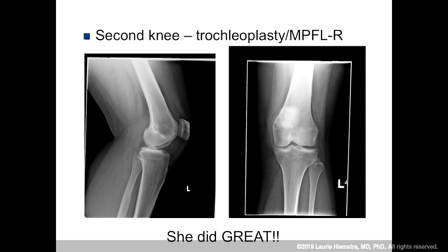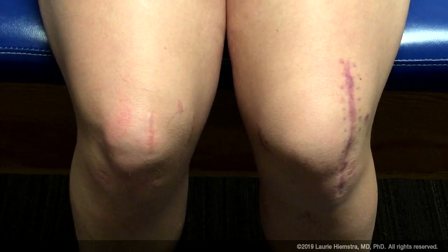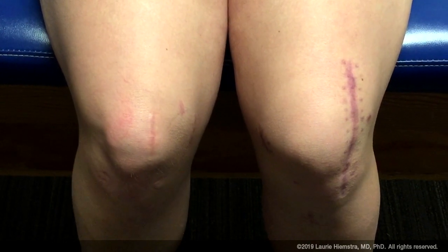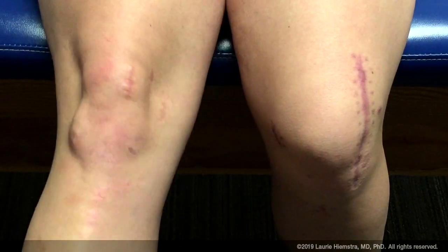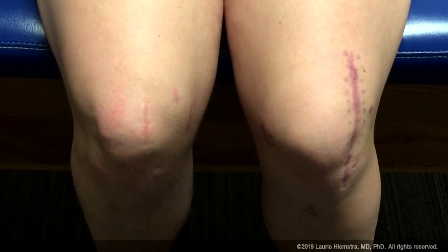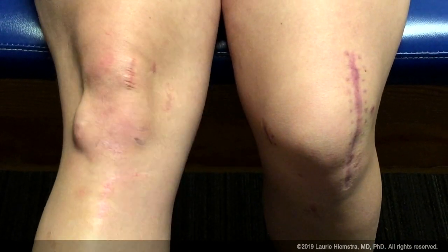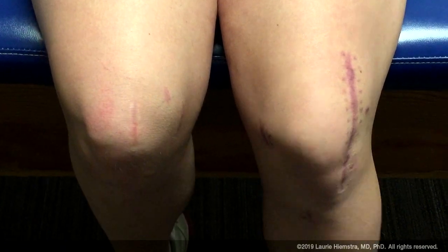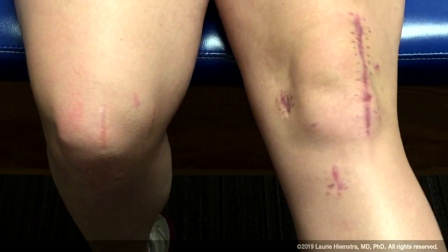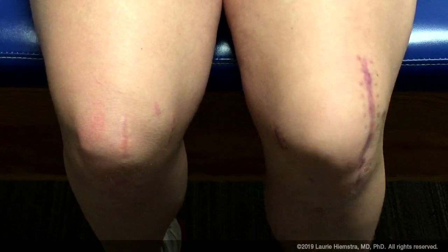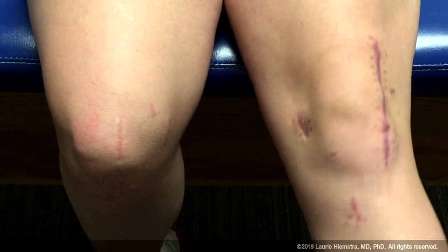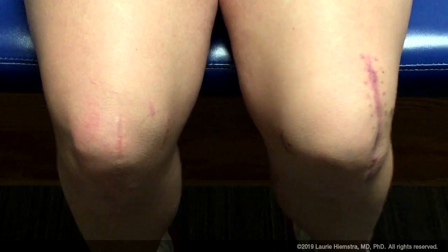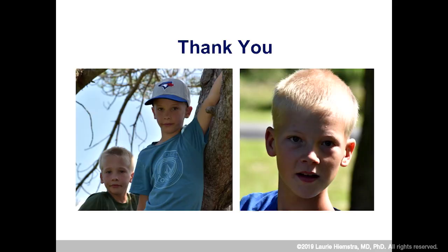What I really want to show you is the comparison. The right knee is the original one we did, and you can see that despite doing the TTO and MPFL, we did not get rid of her J sign. The second knee with trochleoplasty and MPFL — we did the right operation, fixed it at the site of deformity, and she's doing better with no J sign.